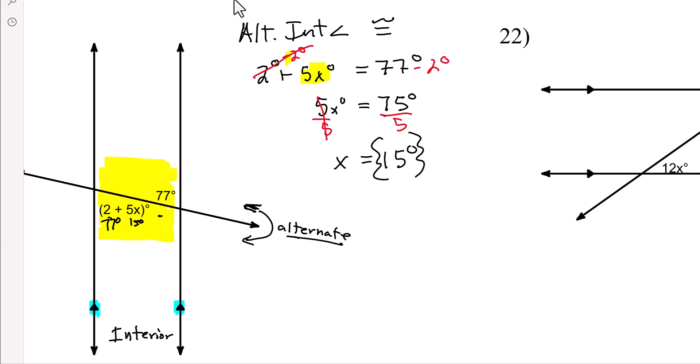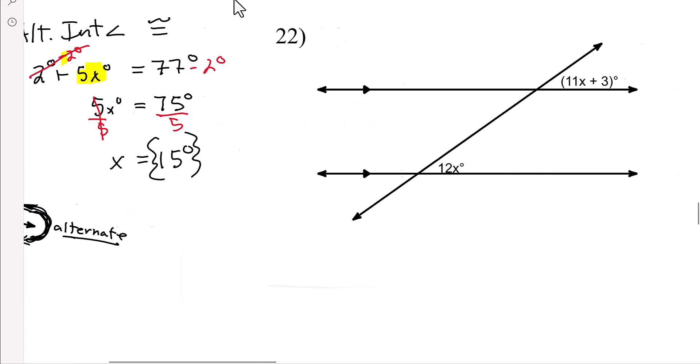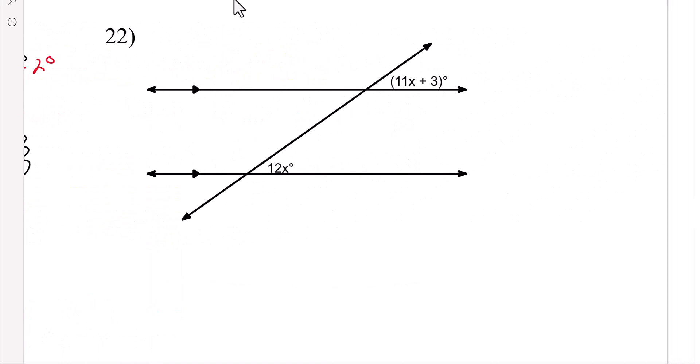So alternate on opposite sides of the transversal, and they were on the inside. Ah, now let's look at this, we've got one on the inside and one on the outside. I know, I'm going to give you that trick, remember when I labeled the angles? So angle 1, angle 2, angle 3, angle 4.